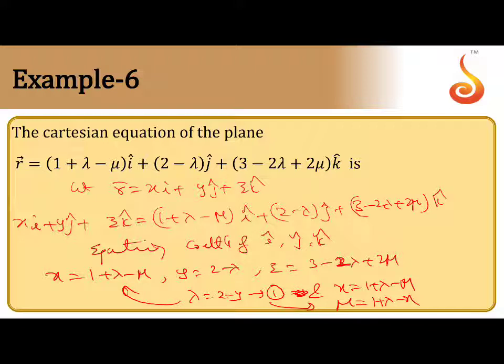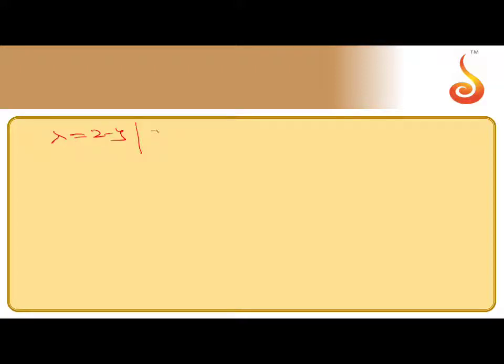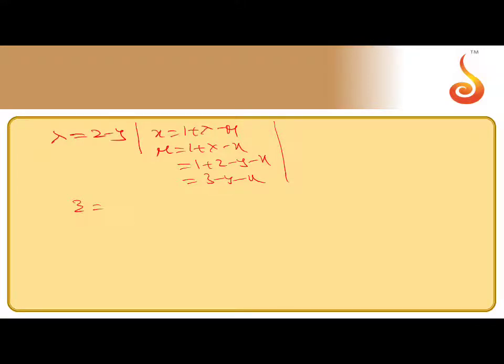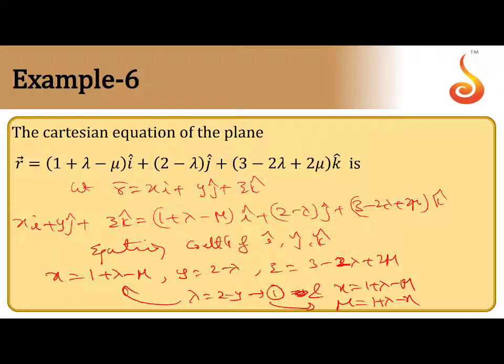Now eliminate λ and μ from the three equations. We have λ = 2 - y and μ = 1 + λ - x = 2 - 2y - x (substituting λ). Now substitute both values into the z equation: z = 3 - 2λ + 2μ.